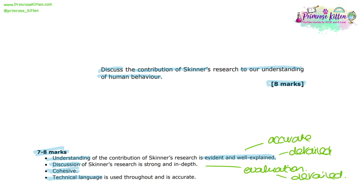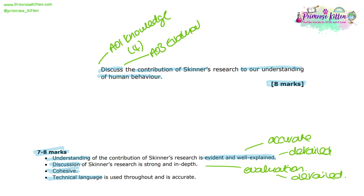We know that for a discuss question, both AO1 and AO3 marks will be available. AO1 knowledge — 4 marks will be available, and AO3 evaluation — another 4 marks will be available. You need to make sure that the material you present reflects this and that there is an equal amount of both AO1 knowledge and AO3 evaluation.